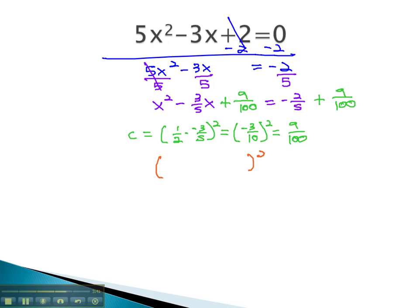On the left side, it will factor to a perfect square. The square root of the first term, sign from the middle, and the square root of the last term.